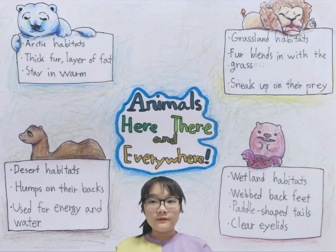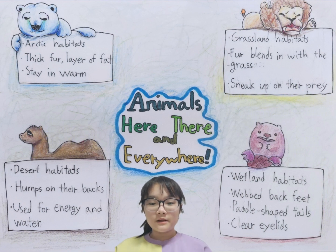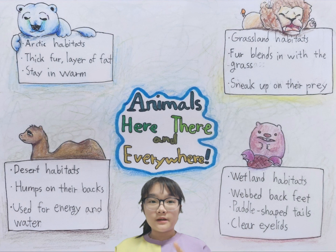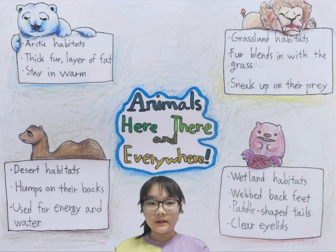Animals live in different habitats. A habitat is where animals live. I'll show you four habitats: first is Arctic, second is grassland, third is desert, and last is wetland.